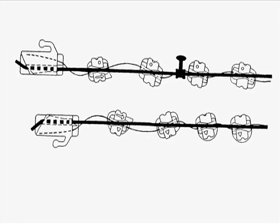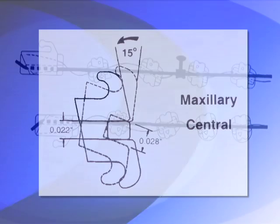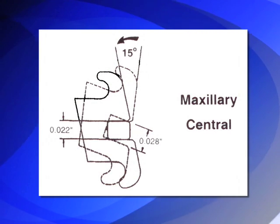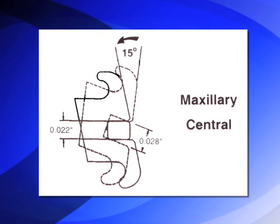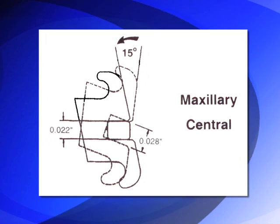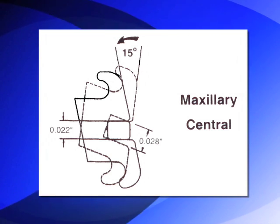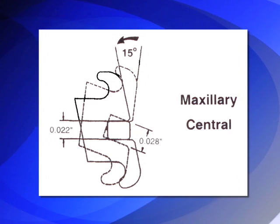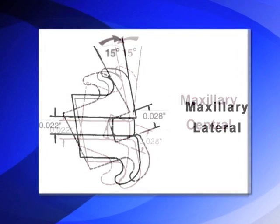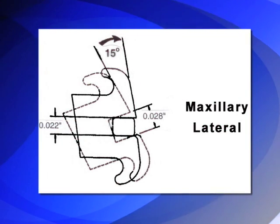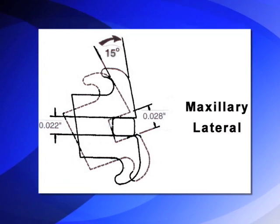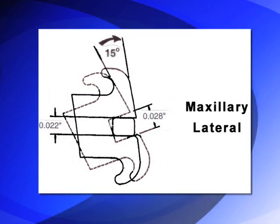Even in non-extraction cases, this is desired, it is expected, and it facilitates opening of deep bites with light forces. The distal tipping of anterior teeth also causes these arch wire slots to increase vertically in size, up to 0.028 inches. This makes it very easy to engage full-size rectangular arch wires. Even large torque discrepancies of up to 15 degrees in either direction can be engaged without any deflection.